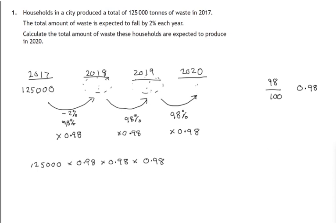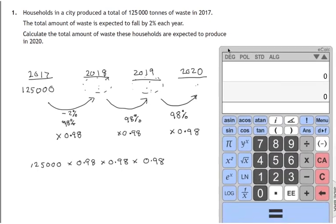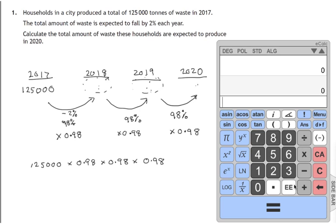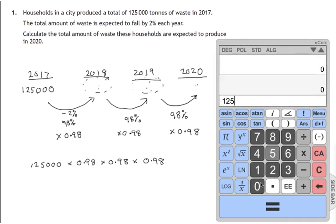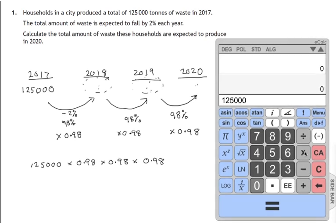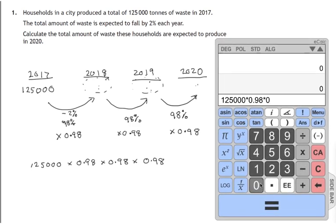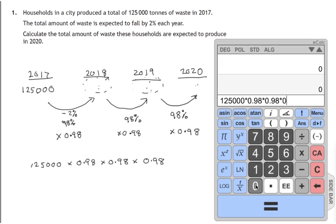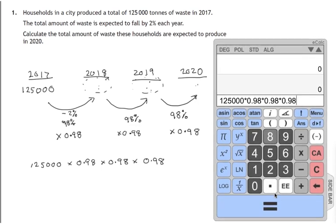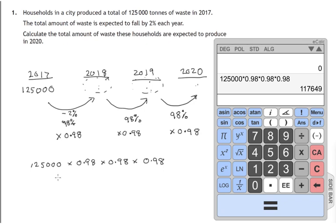So we need obviously a calculator to do that. Here's a calculator. Let's start with 125,000, multiply it by 0.98, multiply again by 0.98, and multiply once more by 0.98. There's our final answer — that gives us 117,649. So that's the estimate for 2020.